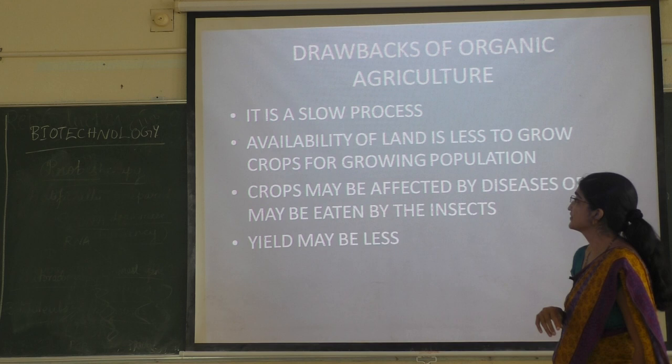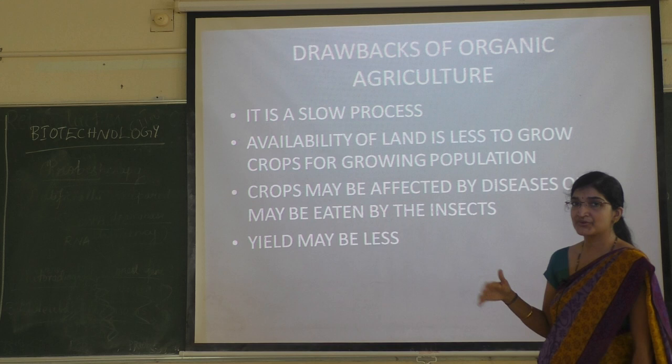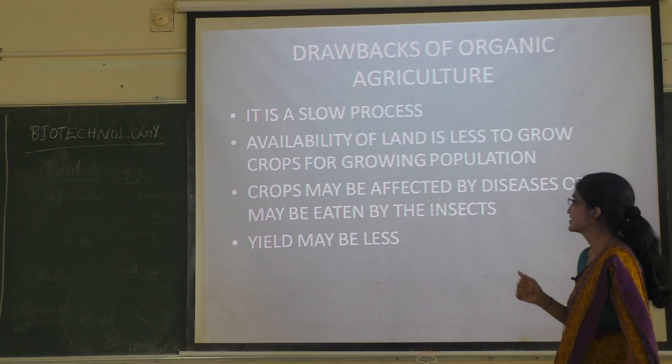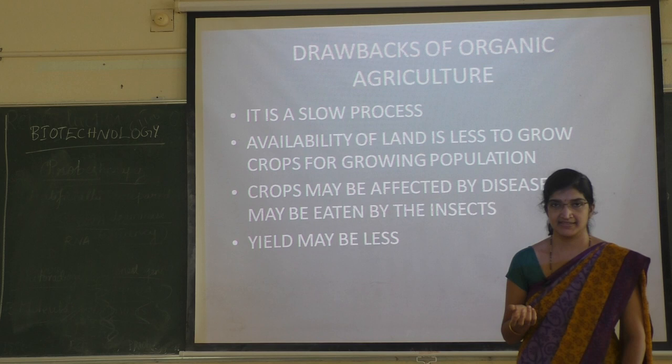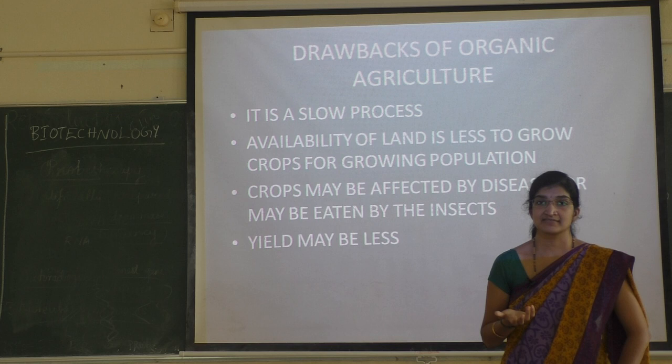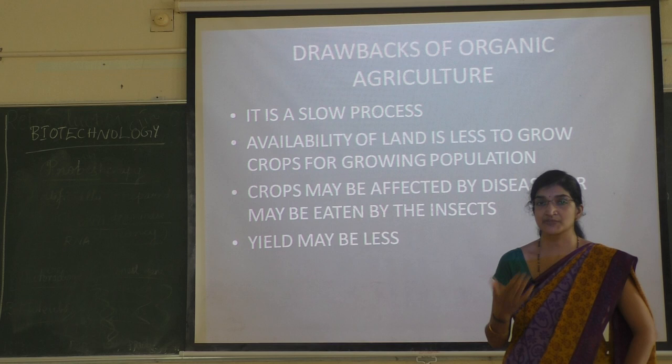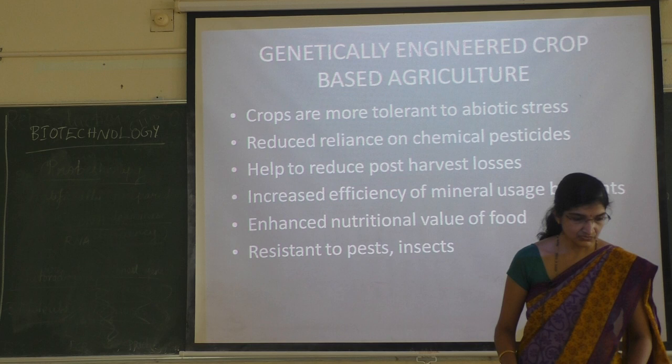Organic agriculture is a slow process; with less available land, only fewer crops are produced and productivity is lesser. Crops may be affected by diseases or eaten by insects, and yield may be lesser. Only by using chemical fertilizers the yield may be more, but it causes pollution. Chemical fertilizers are also expensive compared to organic fertilizers.